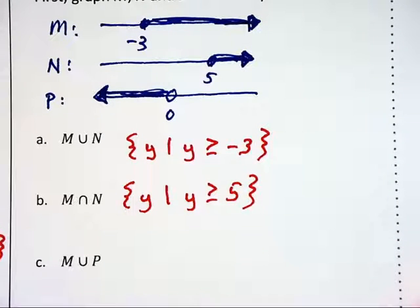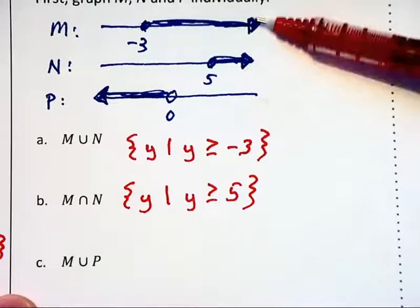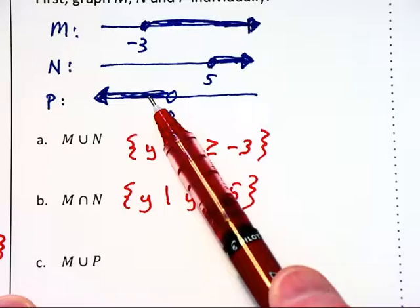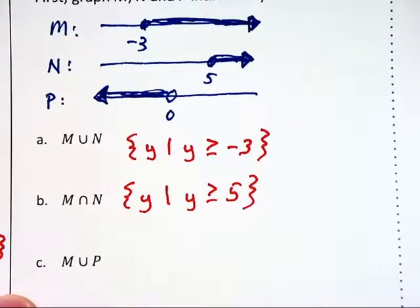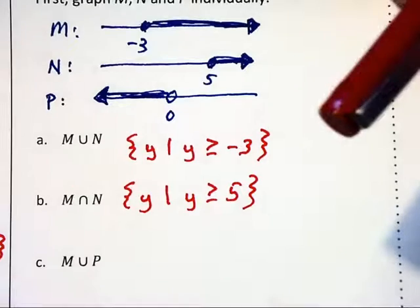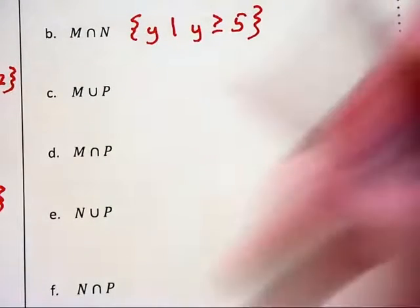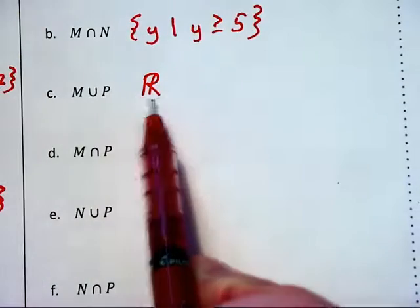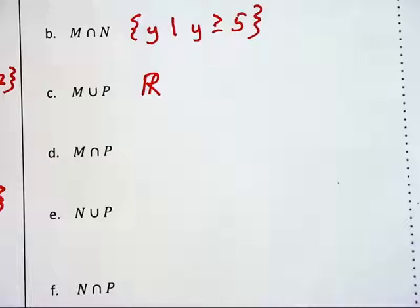In part C, we are asked to find the union of M and P. They overlap in the center, and P heads off to the left while M heads off to the right. So when we unite these two sets together, we get all real numbers. Since this symbol already refers to the set of all real numbers, we do not have to write set notation.